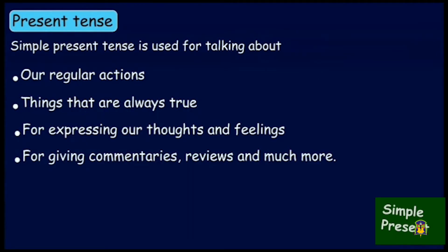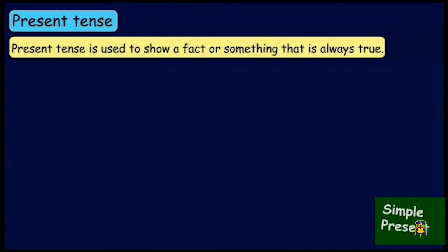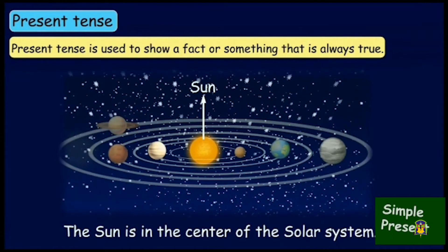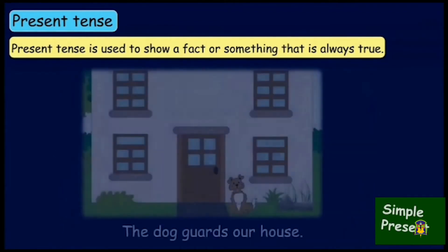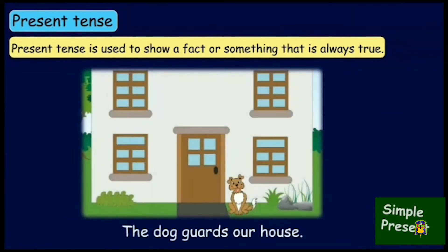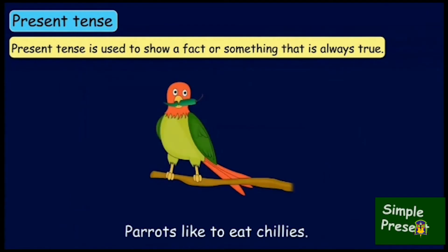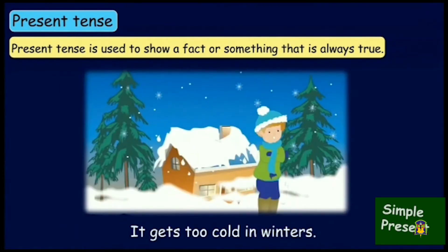Let's learn with some examples. We use present tense to show a fact or something that is always true. Examples: 'The sun is in the center of the solar system.' 'The dog guards our house.' 'Parrots like to eat chilies.' 'It gets too cold in winters.' All these things are always true as they are facts. That is why we have used present tense here.